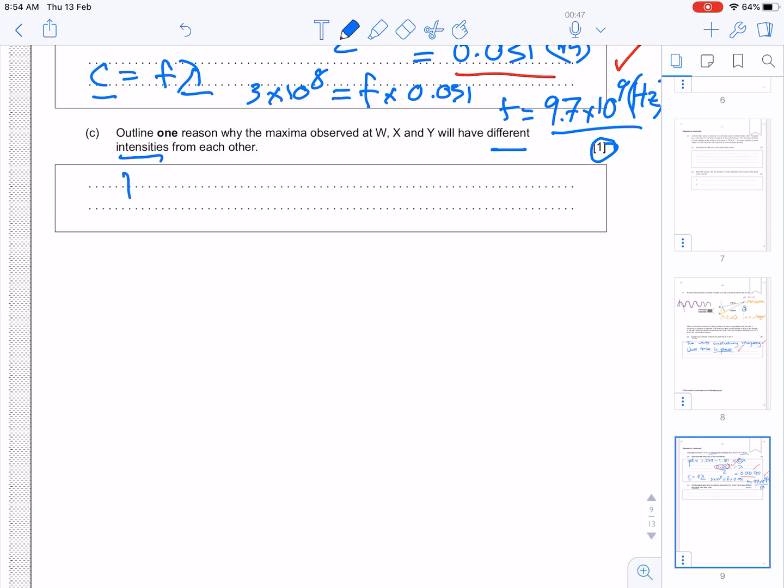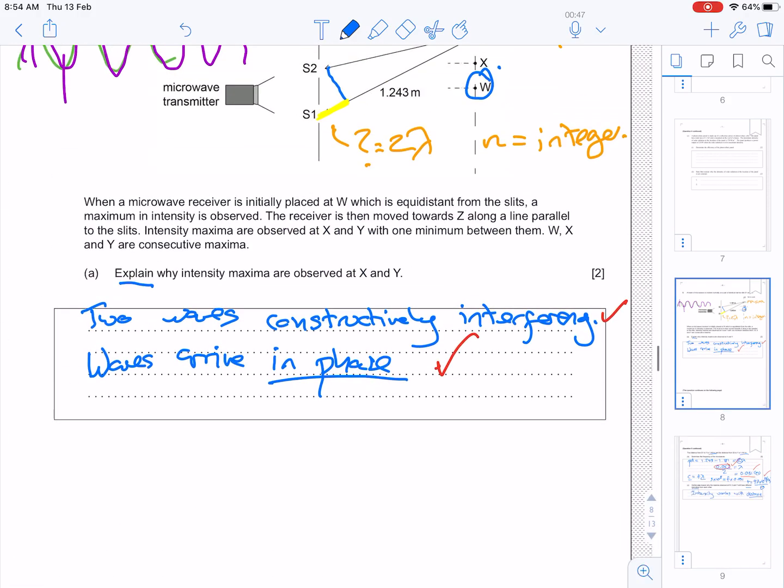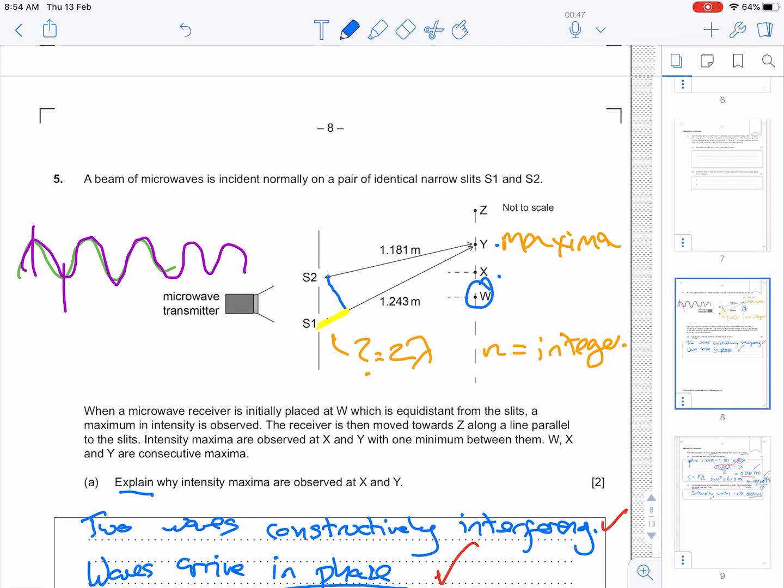So, quite simply, we just say that intensity varies with distance. And you can see, hopefully, that the rays have had to travel further to Y and less distance to W, so we'd expect to see a lower intensity at Y because of that.